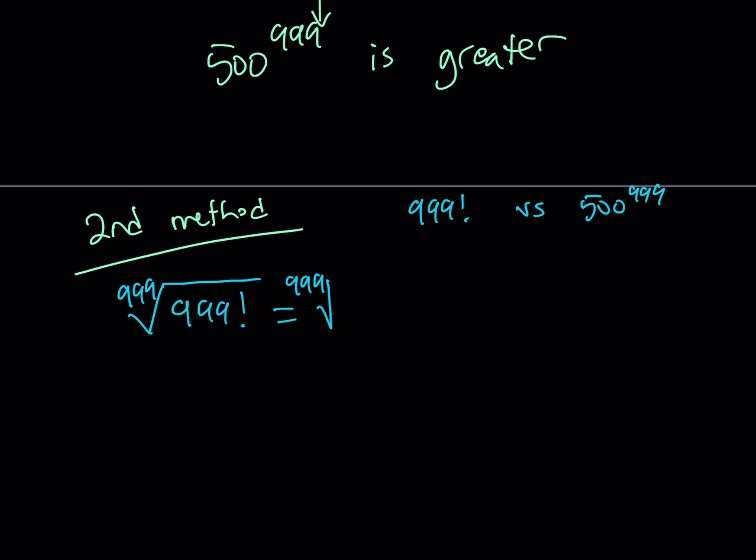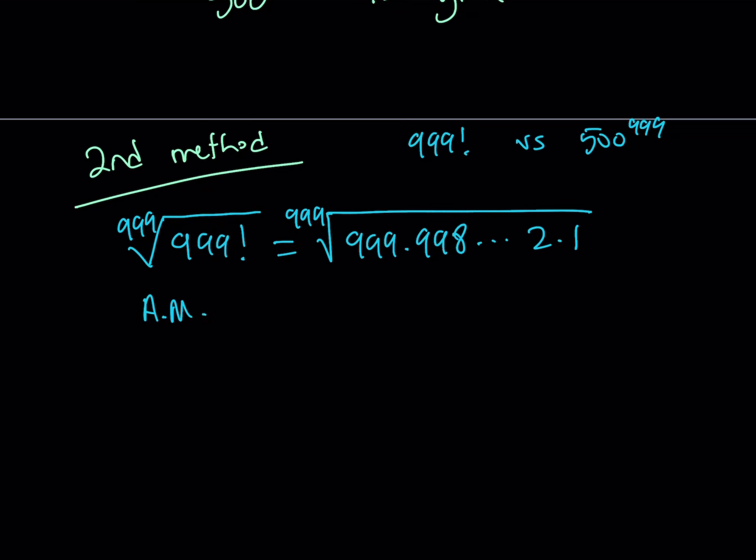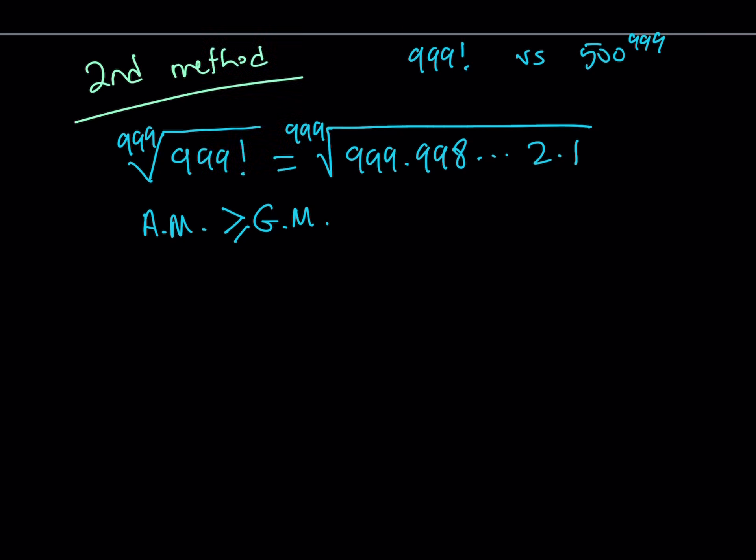This is going to give me something like this. If you expand it, you're going to get 999th root of 999 times 998, dot dot dot, all the way up to 2, 1, so on and so forth. That's a radical expression. Now at this point, I'm going to use the AM-GM inequality. What does AM-GM inequality tell me? It tells me that the arithmetic mean of a bunch of numbers is always greater or equal to their geometric mean, and the equality is attained when all the numbers are equal.